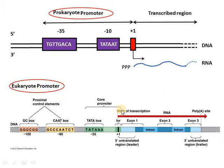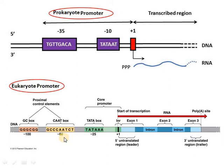Eukaryote ka promoter thoda sa different hota hai. Agar plus 1 pehla point hai jahan se transcription shuroo honi hai — start of transcription — toh isse pehle jo TATA wala sequence hai, vo kehlaata hai TATA box, aur yeh minus 25 hota hai. Aur minus 35 sequence ki jagah eukaryote mein ek box hota hai called CAAT box, jo approximately minus 70 ya minus 80 pe hota hai. Aapki book mein minus 70 likha hua hai, aap vahi value lijiye. Aur usse pehle bhi kuch sequences hote hain jo milke determine karte hain ki kis point par polymerization wala enzyme aake attach hoga aur transcription shuru kar dega, taaki RNA banna shuru ho jaye.